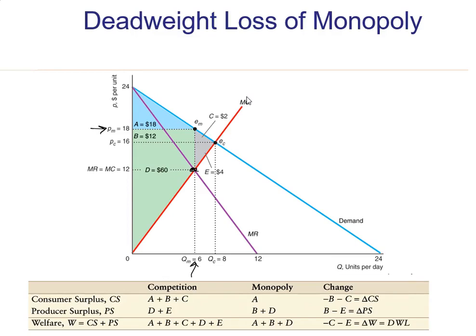So let's identify all of the surplus areas for this monopolist, and then we will talk about where the deadweight loss is. Where's the consumer surplus region? Well the price is 18, and that's the area below the demand and above the price. So it's this blue triangle that is consumer surplus.